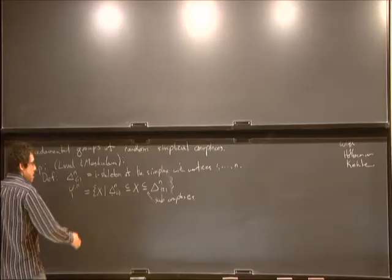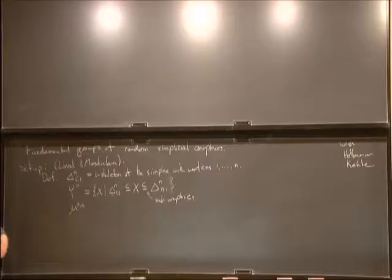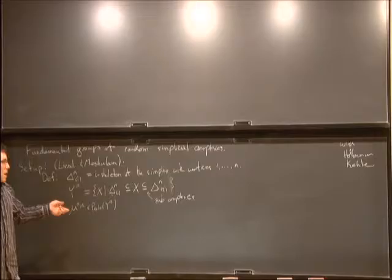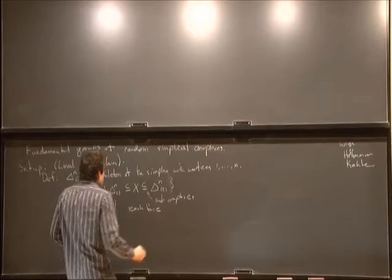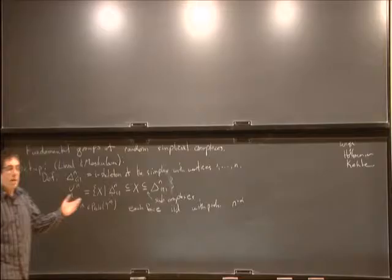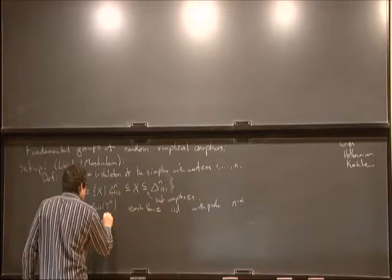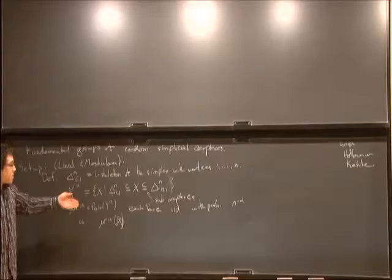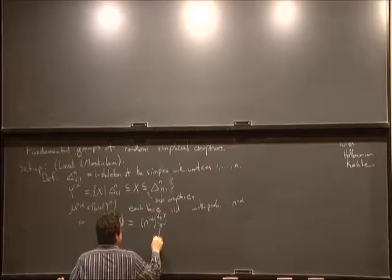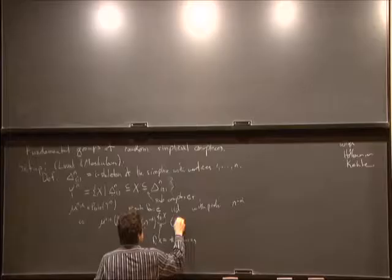We want some probability distribution on them — some measure μ_{N,α} indexed by a parameter α, which is the probability with which I toss in each face. This is a probability measure on Y_N where each face is included IID with probability N^{-α}. In other words, the measure of any particular singleton is given by N^{-α} times its number of two-faces, times (1 - N^{-α}) times the number that aren't there.